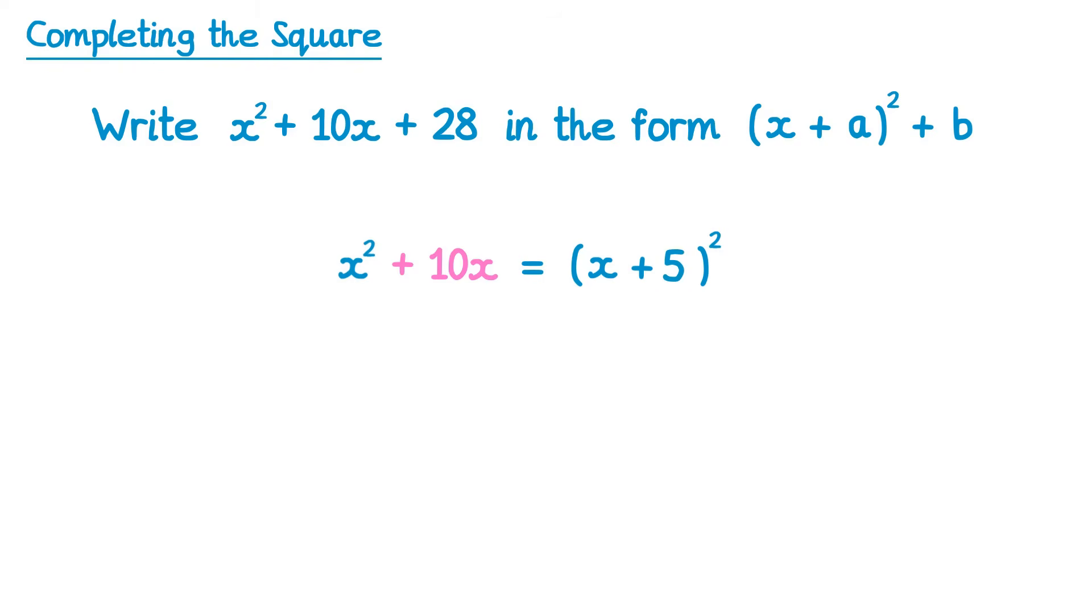But when you expand x plus 5 all squared, we know we get three terms. We'll get an x squared, we'll also get a plus 10x, and then we'll get plus 25 at the end from 5 times 5. But that's not what we've written down so far.